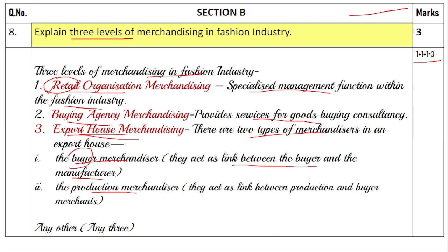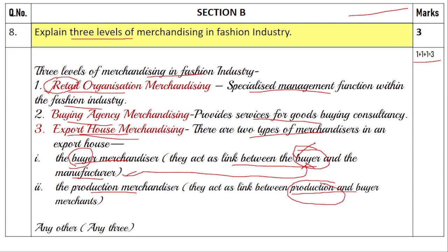Finally, export house merchandising basically deals with exporting fabrics. Export houses need two types of merchandisers: buyer merchandiser and production merchandiser. The buyer merchandiser acts as a link between the buyer and the manufacturer. This buyer merchandiser first identifies the needs of the buyer and then looks out for a manufacturer who meets those needs, shows samples, and gets orders finalized. The production merchandiser acts as a link between the producer and the buyer — employed more on the production side.